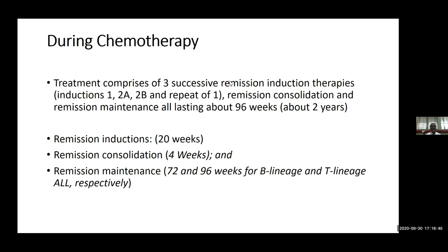The treatment involves three successive remission induction therapies — 1, 2A, 2B, and a repeat of 1 — then remission consolidation and remission maintenance, with the entire treatment lasting 96 weeks, approximately two years. Remission induction will be done within 20 weeks, consolidation within four weeks, and maintenance 72 to 96 weeks respectively — 72 weeks for B-cell types and 96 weeks for T-cell lineage ALL.